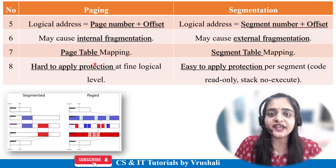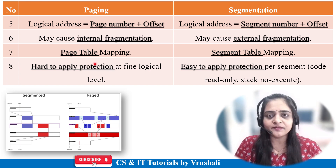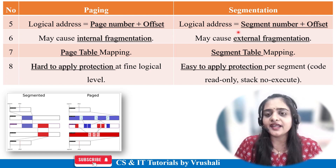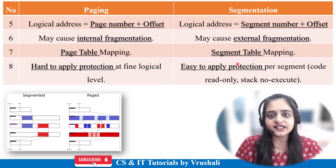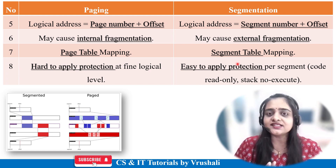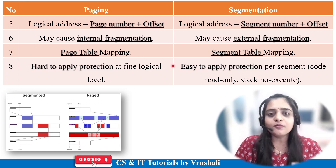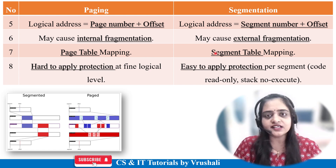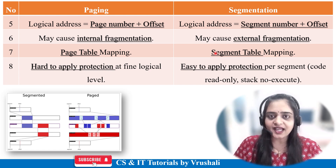In paging, a page table is used for mapping. It stores the page number and frame number. In segmentation, a segment table is used. It stores the segment number, base address, and limit of each particular process. Essentially, both these tables are used for mapping purposes — they convert your logical address into the physical address.